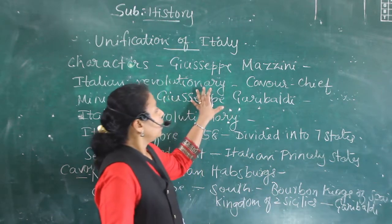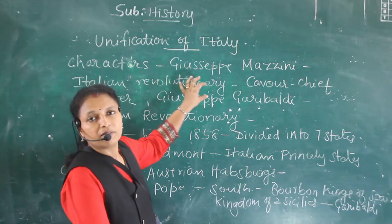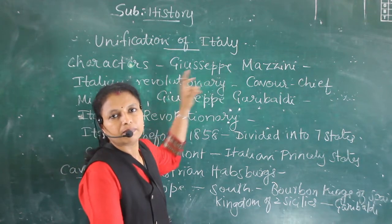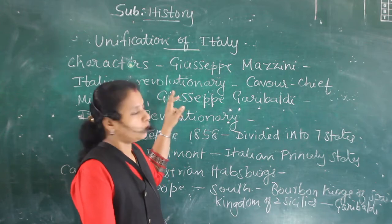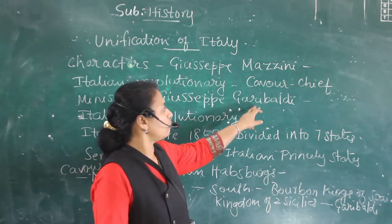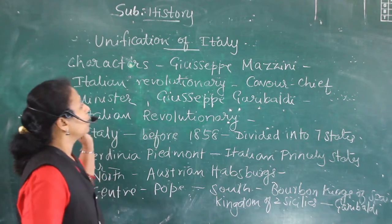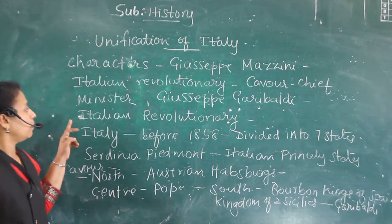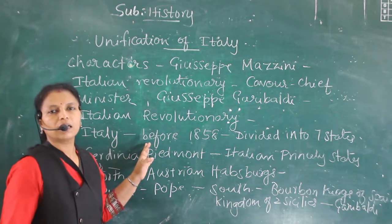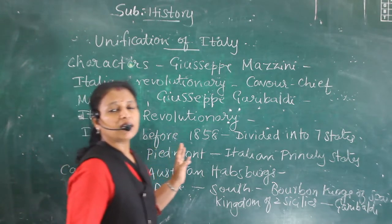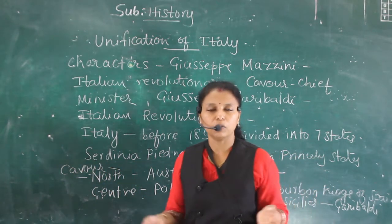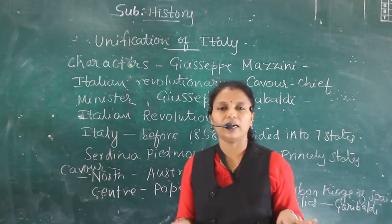So these four people were involved in the Italian unification: Mazzini, Garibaldi, King Victor Emmanuel II, and Cavour — who was the chief minister under Victor Emmanuel II. In 1830 and 1848, Italy tried to achieve unification but it failed.